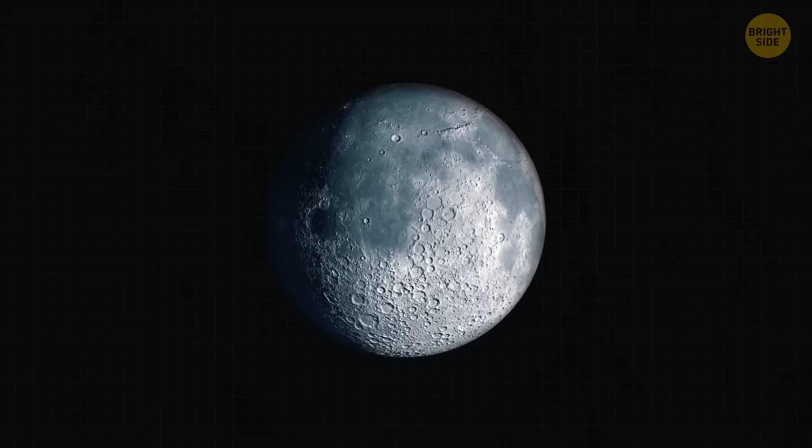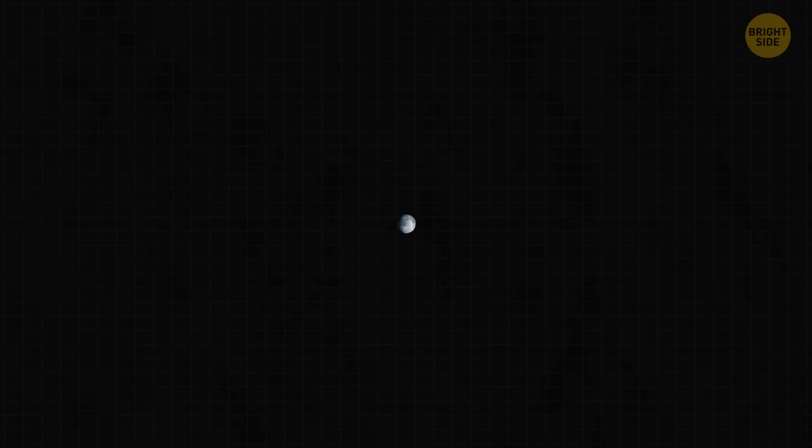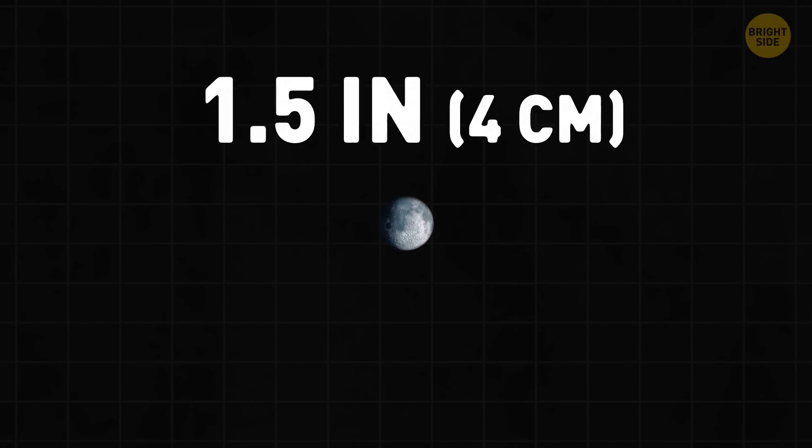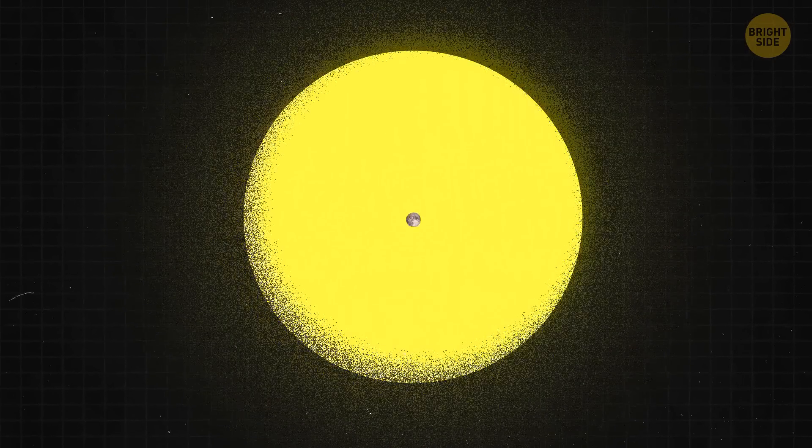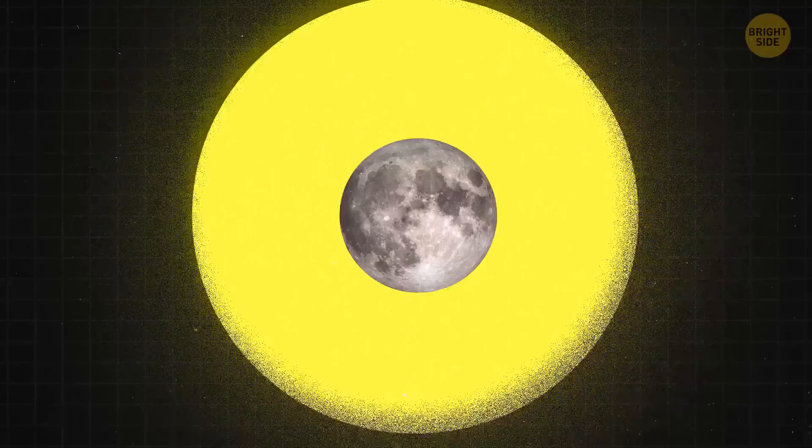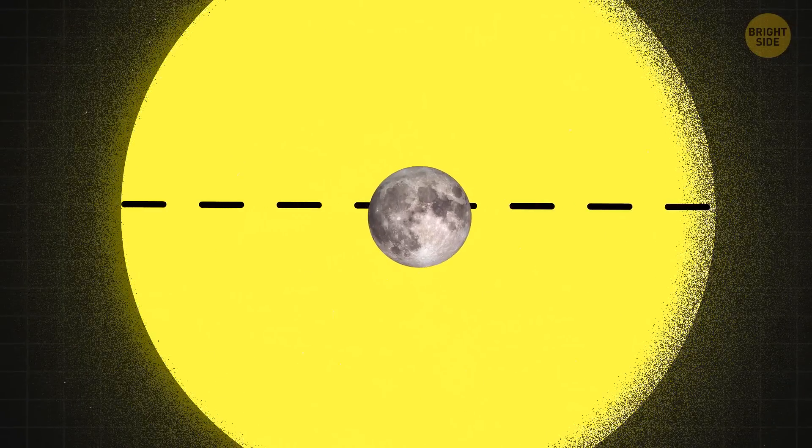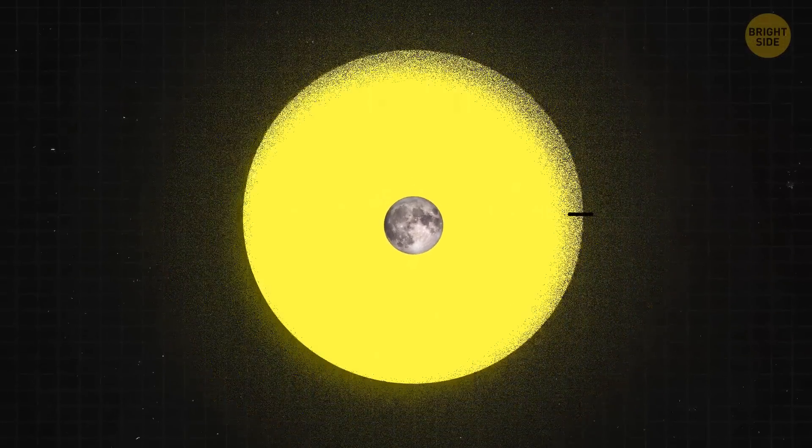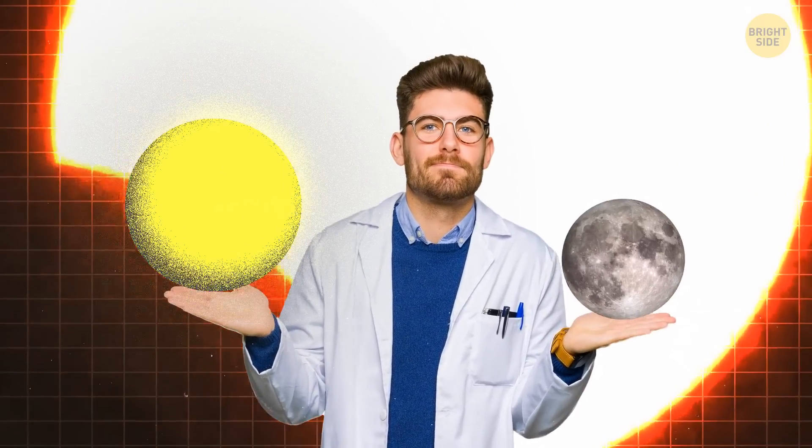You see, the moon is actually drifting away from Earth, sliding away about one and a half inches every year. Because of this movement, the moon will no longer completely block out the sun. Experts at NASA went on to calculate when the last solar eclipse will happen. They say it's still going to take about 600 million years, so it's safe to say none of us will be here to see it.